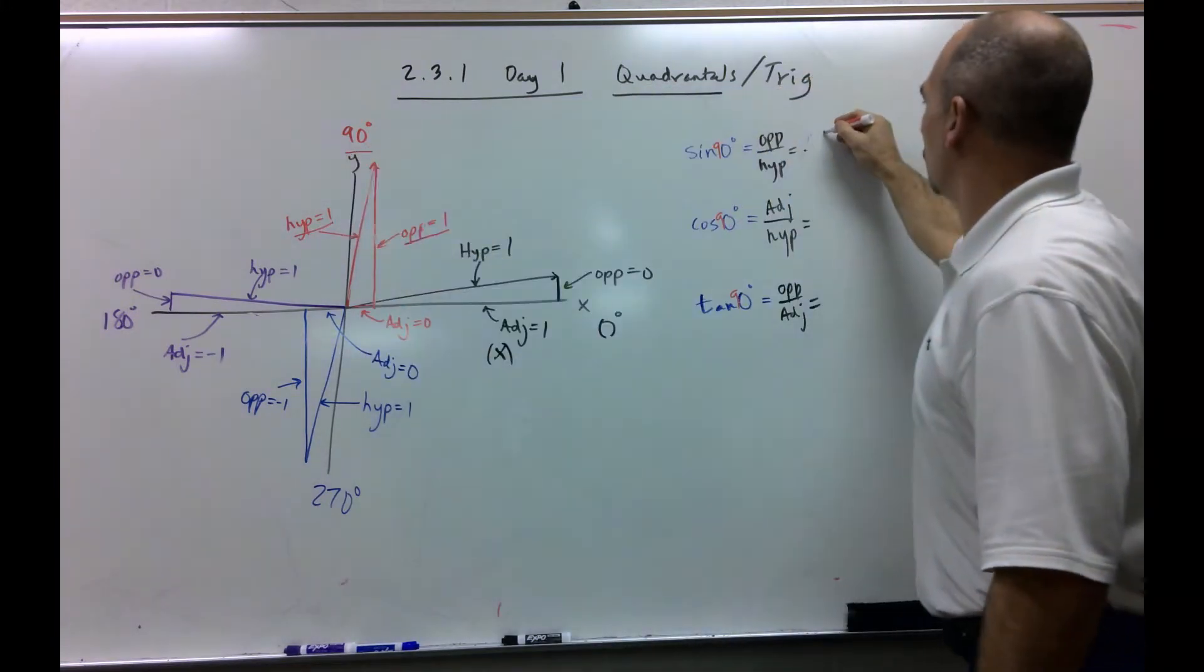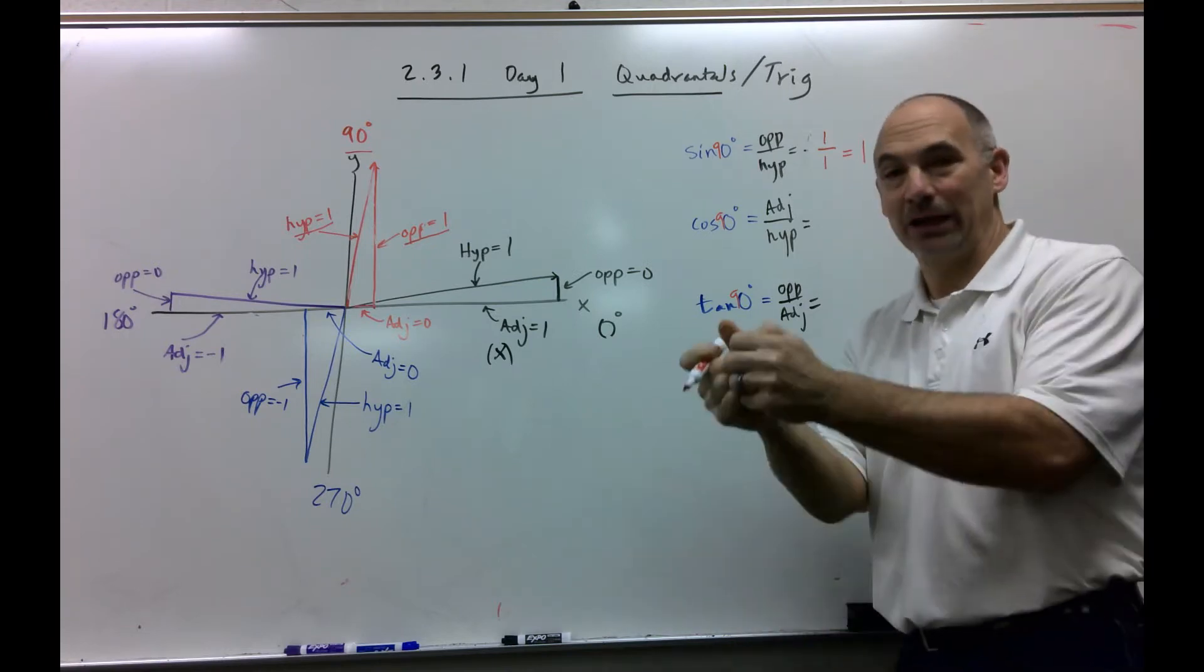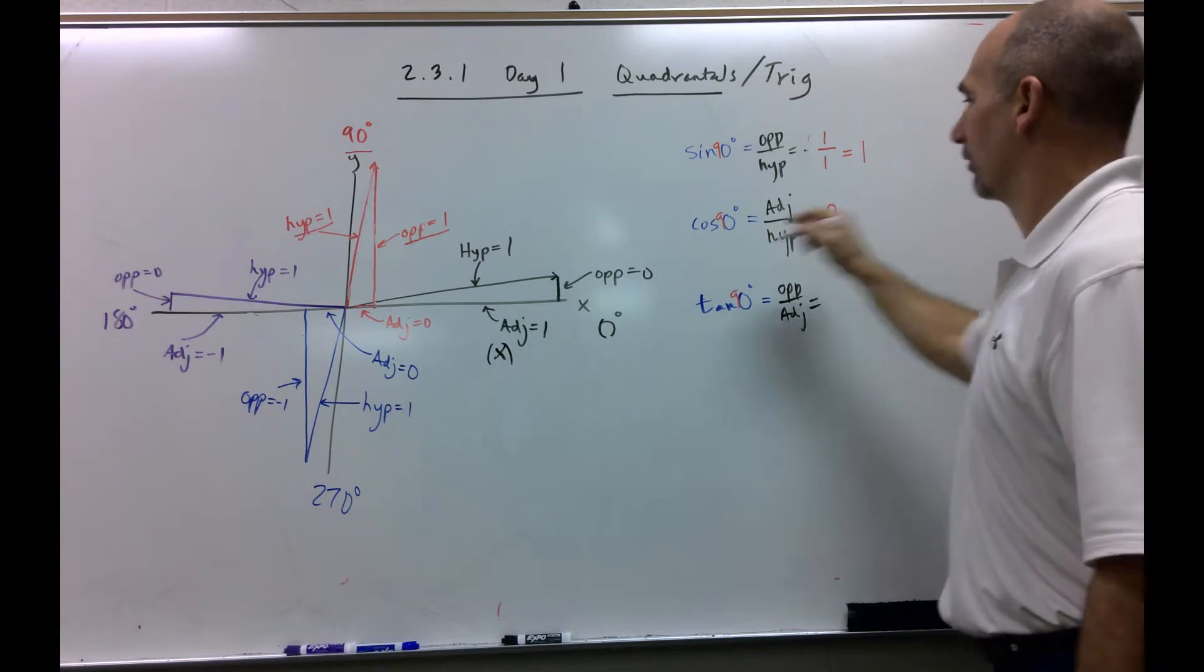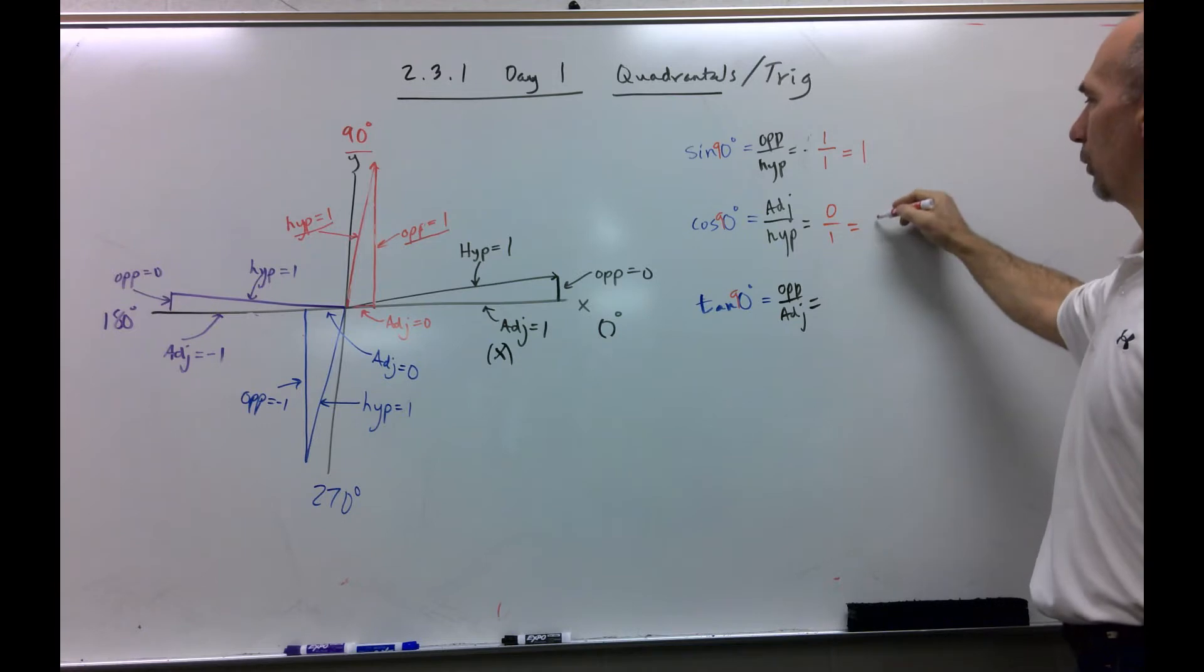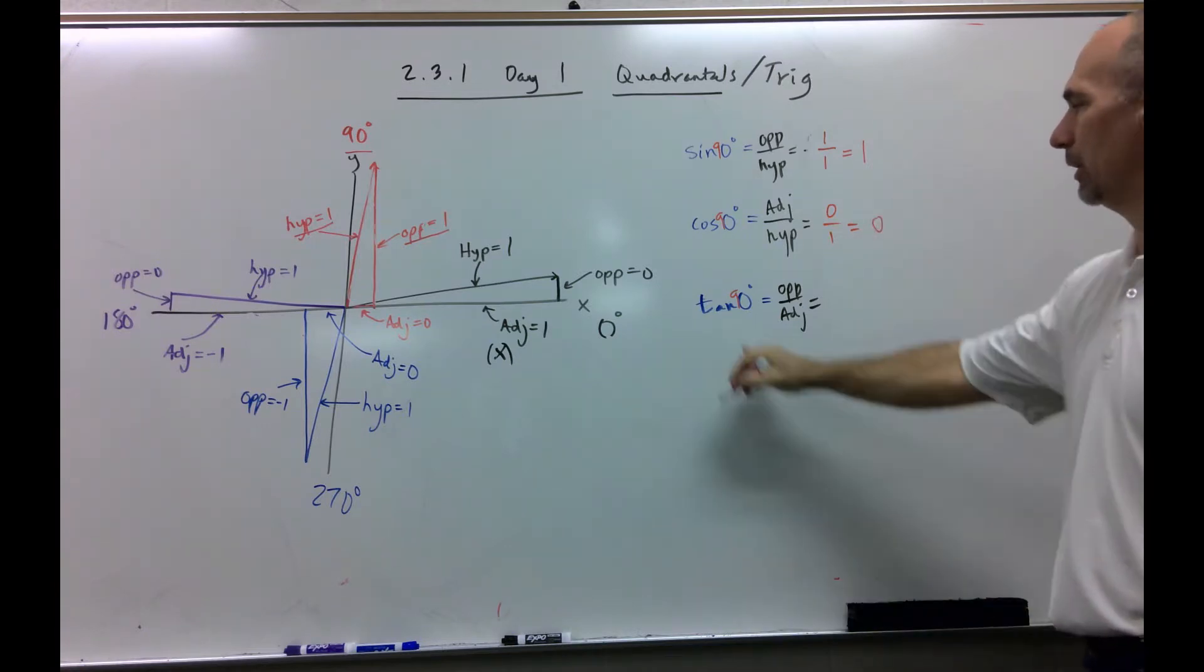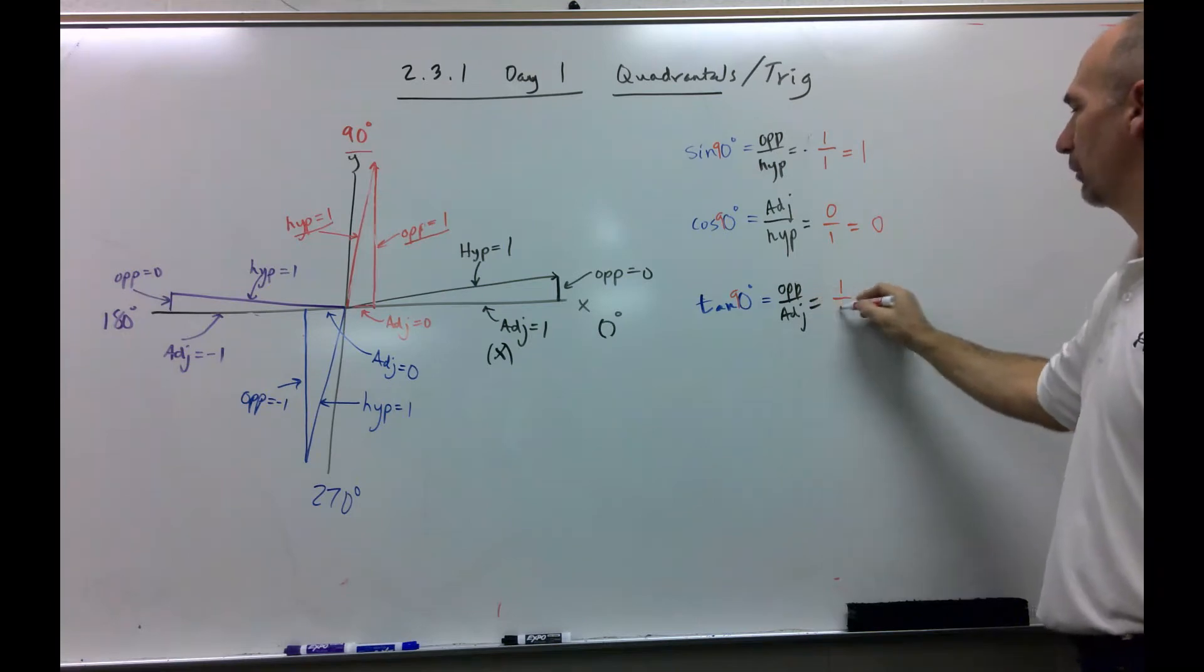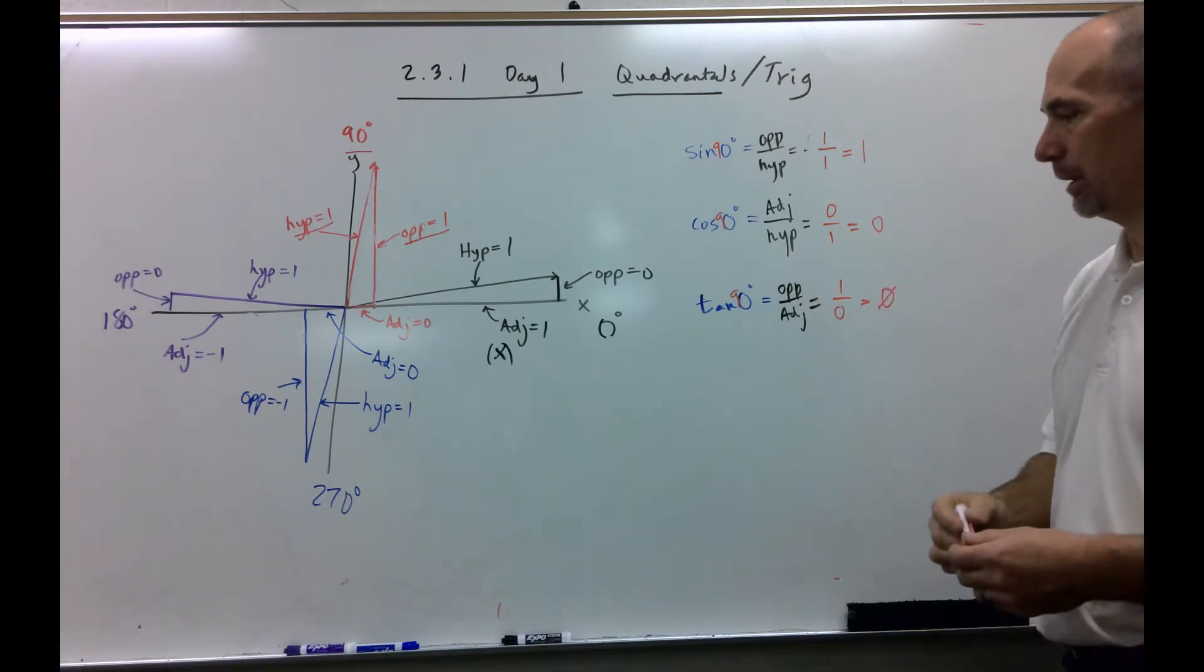So, opposite would be 1. Hypotenuse would be 1. So, sine of 90 is 1. Check it out in your calculator. Cosine. Adjacent, which is the side that disappears, over my hypotenuse, 0 over 1 is 0. Tangent. Opposite, which is 1, adjacent, which is 0. Undefined at 90 degrees.